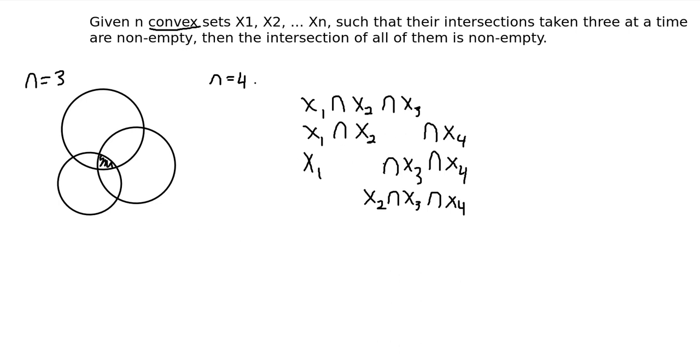X1 intersect X3 intersect X4; and X2 intersect X3 intersect X4. So we have these four different sets, and we're given that they're non-empty.